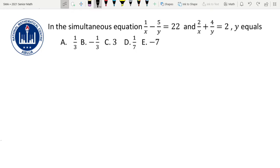We'll be using the elimination method of solving simultaneous equations. I'll start by writing out the two equations we have. We have 1/x - 5/y, so to make things cleaner I'll write 5/y as 5 into 1/y, and this equals 22.